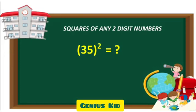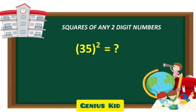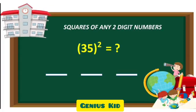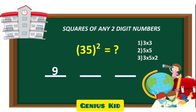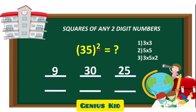Now, let's quickly solve another example. For 35 square, the first part of the answer will be 3 squared, which is 9. The last part will be 5 squared, which is 25. And the middle part will be 3 times 5 times 2, which is 30.